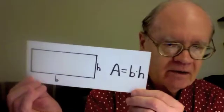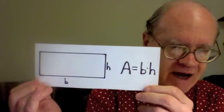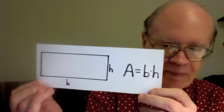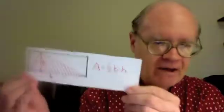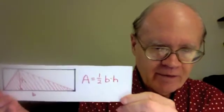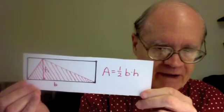The formula for the area of a rectangle is area equals base times height, b being the base, h being the height of this rectangle. Since a triangle is half a rectangle, the formula for the area of a triangle is one-half the base times the height.